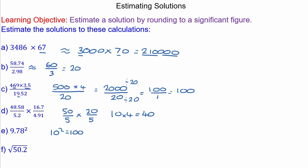Question F is slightly more difficult because we're not going to round it to a significant figure, but we're going to round it to its nearest, which is 49. And the square root of 49 is 7.